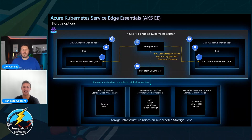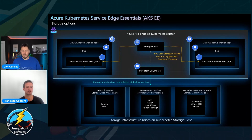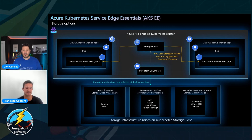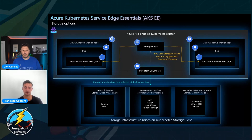I'm not going to deep dive into the overall AKS Edge Essentials architecture — we already talked about that. So let's focus specifically around storage. You can see we have both Linux and Windows worker nodes. There are three concepts I'm pretty sure you're familiar with. Storage class represents the type of storage you want to use in the cluster — this could be local storage, NFS storage, or fast SSD storage.